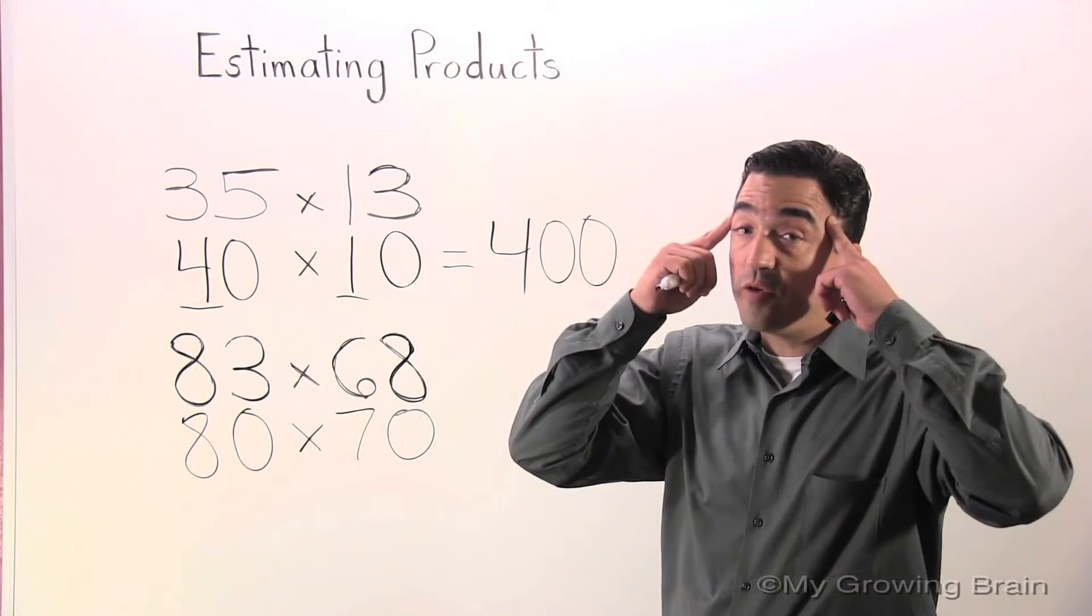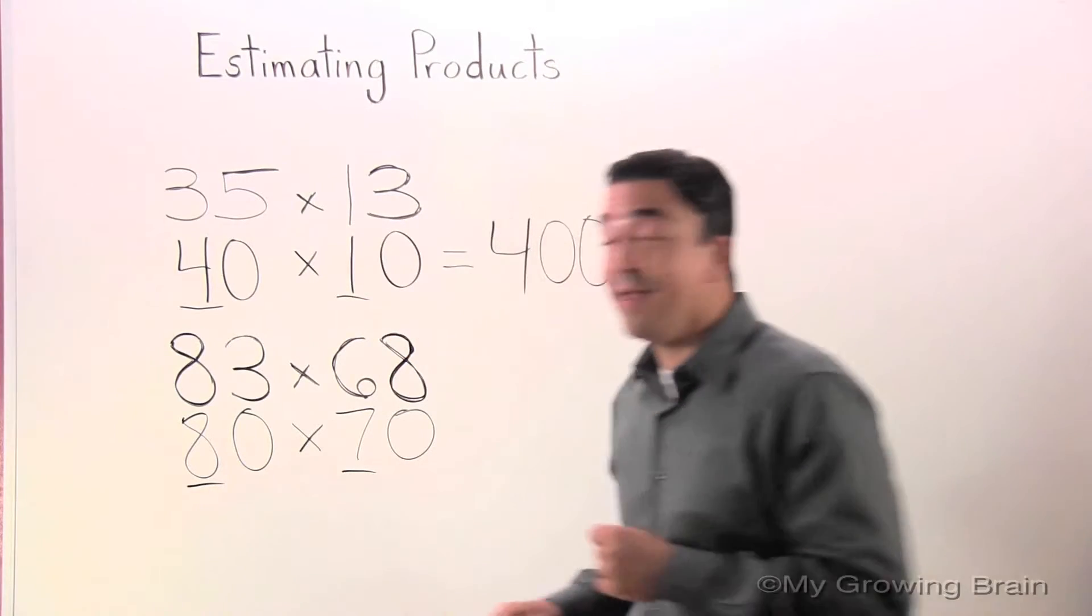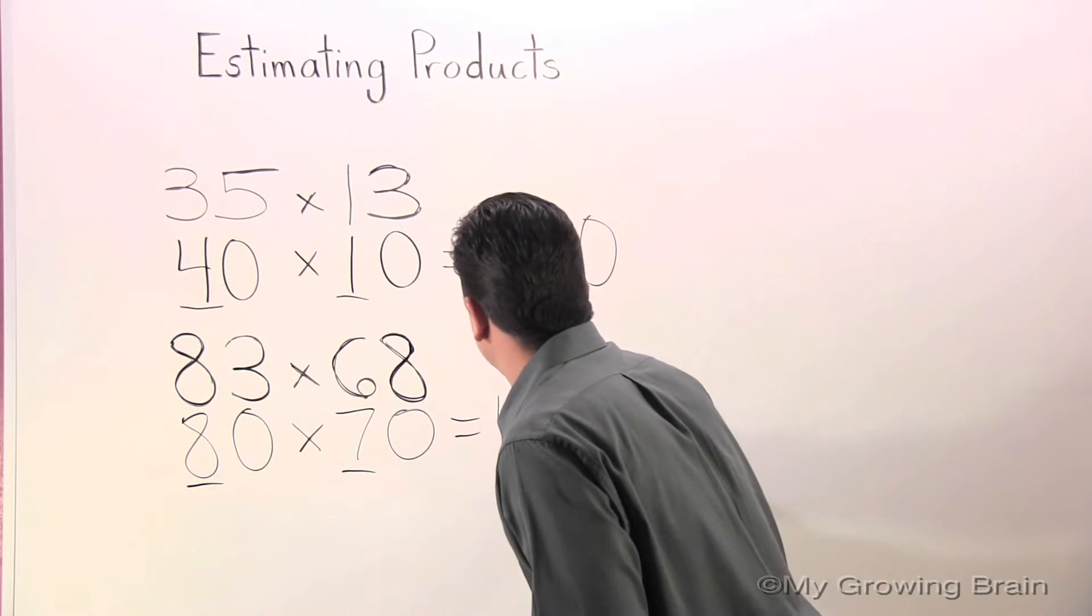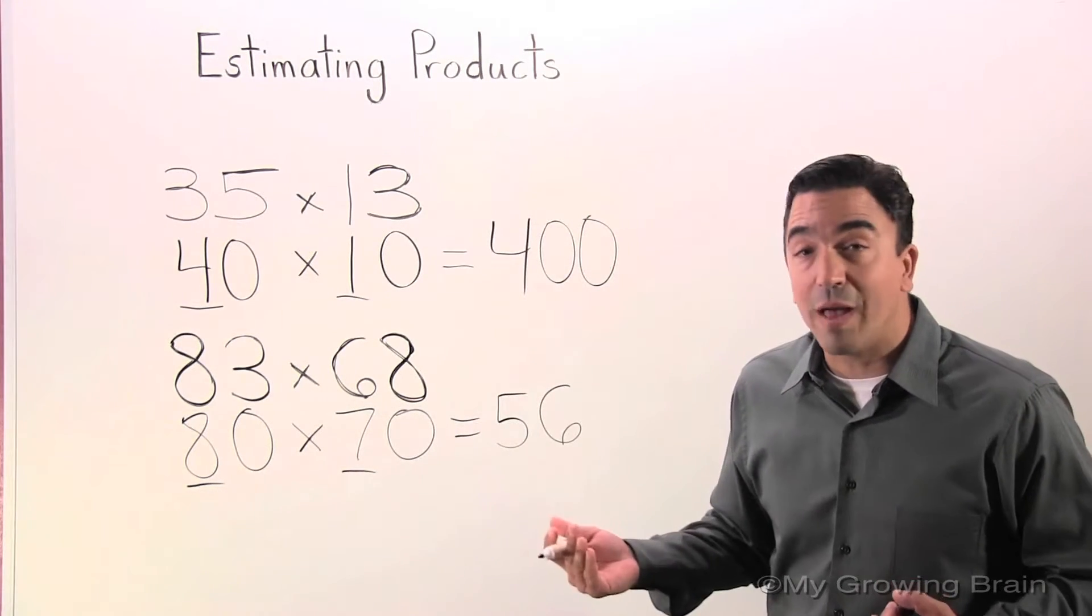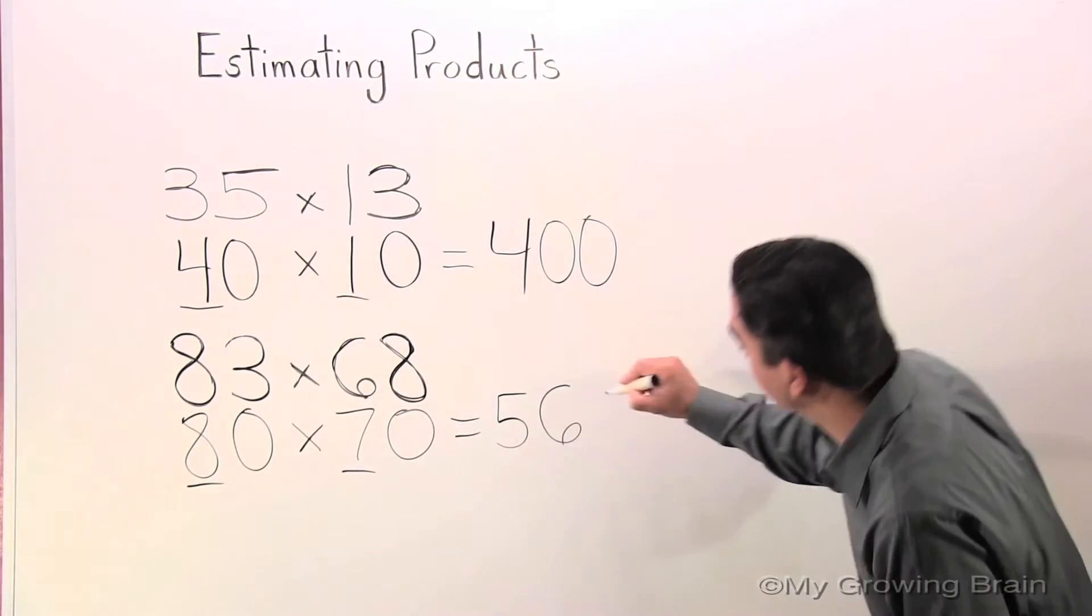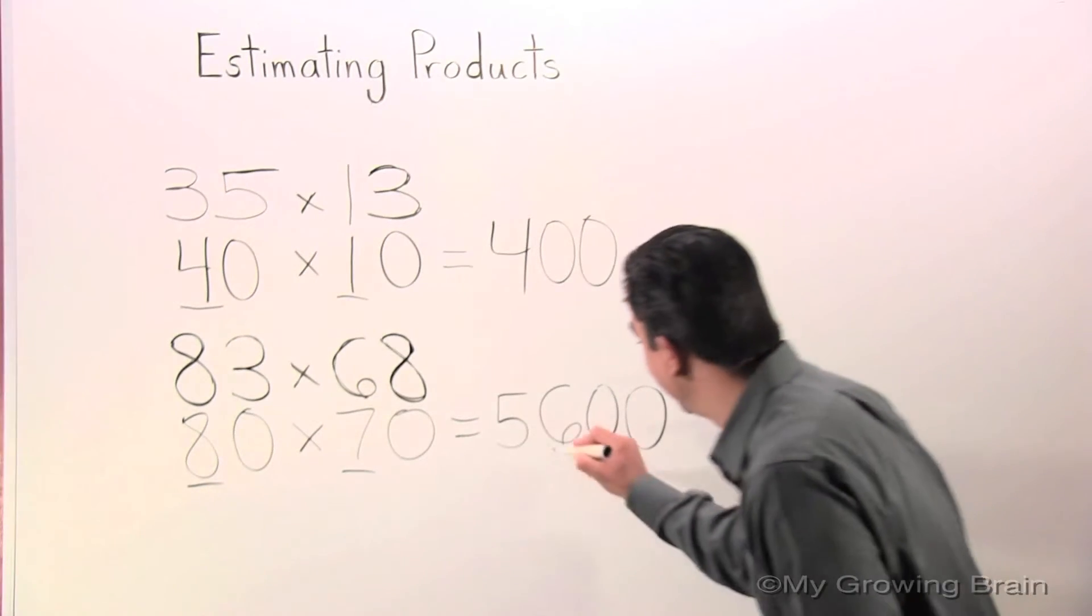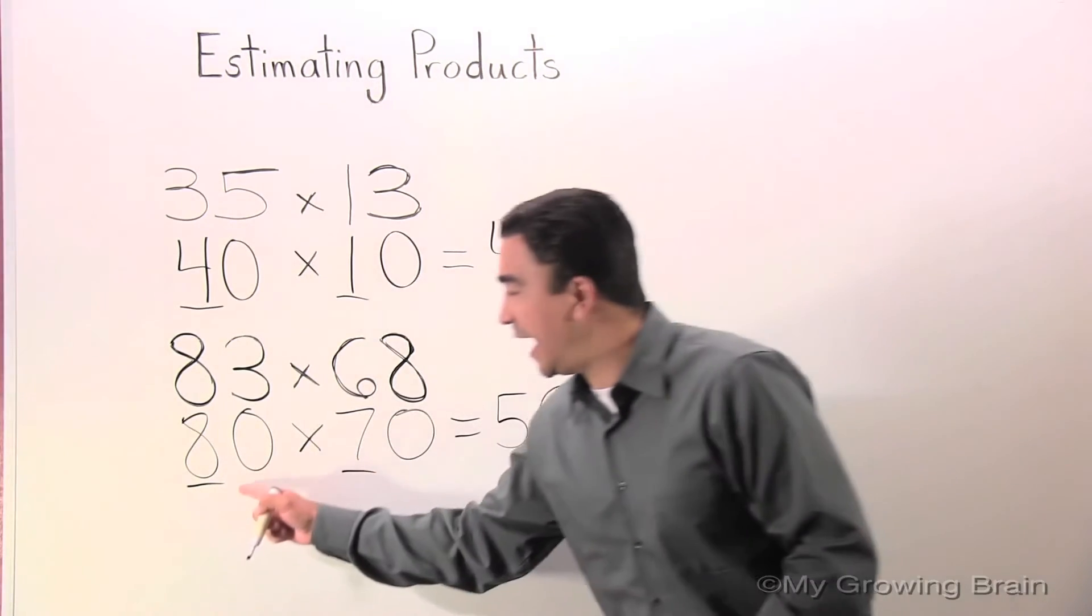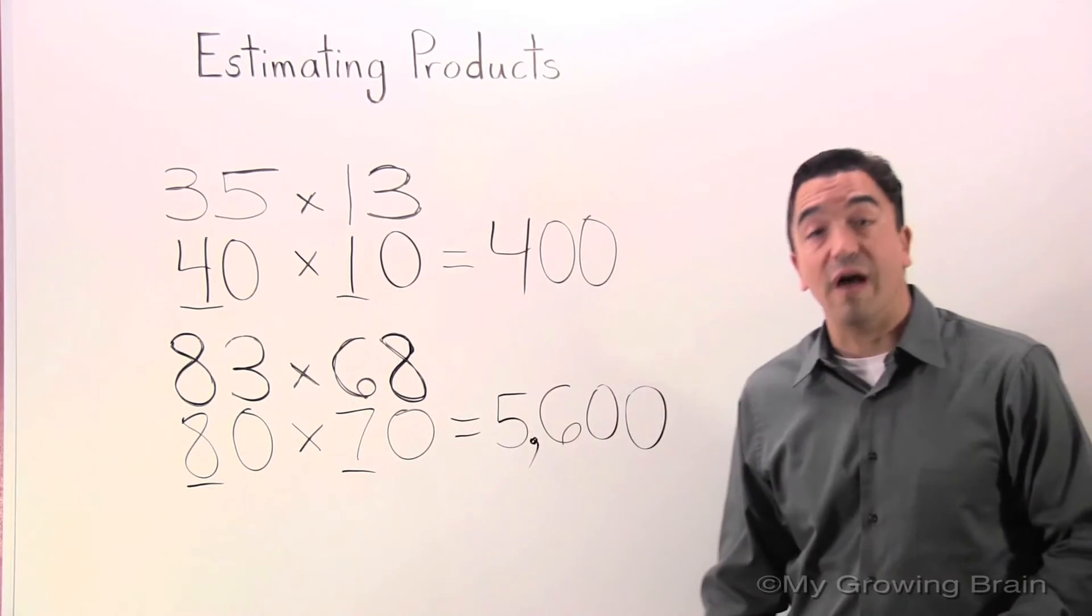Once again, I'm going to use mental math. 8 times 7 is 56. Let me grab my two zeros. Don't forget the comma. 80 times 70 equals 5,600.